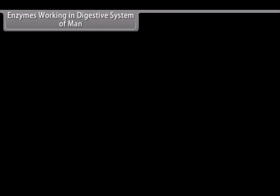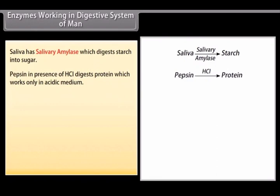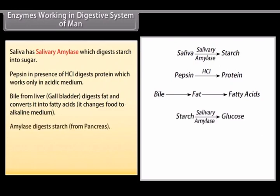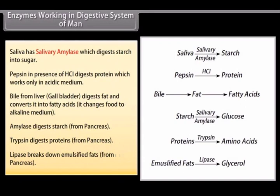Enzymes working in the digestive system of man: saliva has salivary amylase which digests starch into sugar. Pepsin in the presence of HCl digests protein and works only in acidic medium. Bile from the liver and gallbladder digests fat and converts it into fatty acids, and changes food to alkaline medium. Amylase from the pancreas digests starch. Trypsin from the pancreas digests proteins. Lipase from the pancreas breaks down emulsified fats.